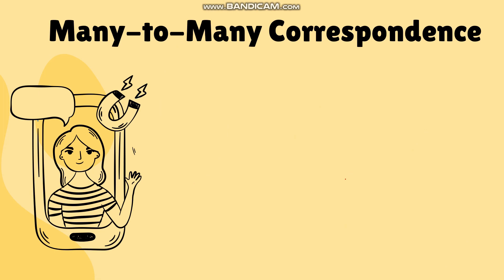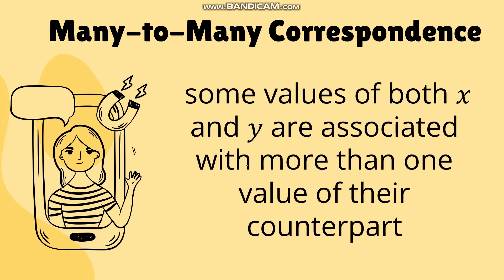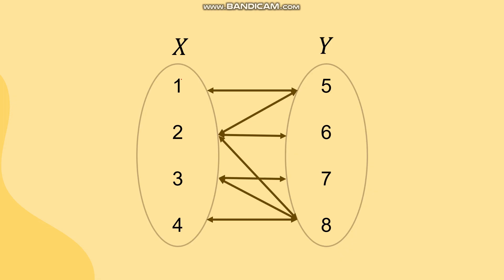In many-to-many correspondence, both x and y are associated with more than one value of their counterpart. It is like a combination of the last two. For example, x values of 1 and 2 give y equals 5, and if x is 3, then the values of y can be 7 and 8. So it is a combination of one-to-many and many-to-one.